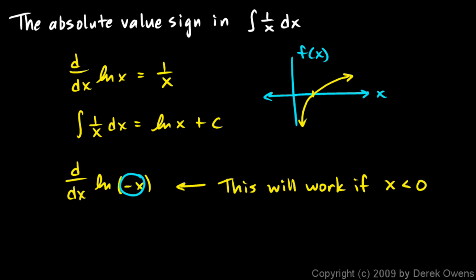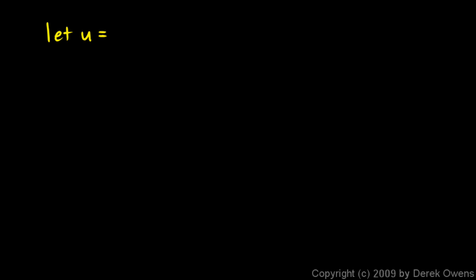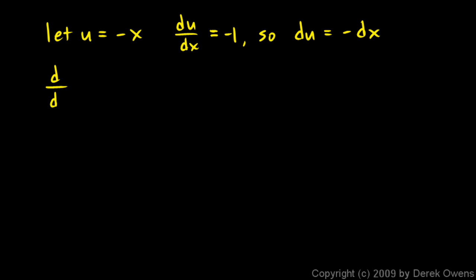Because if x is negative, then negative x will be positive, and we can have a positive value as the argument for our natural log function. So the question becomes: how do we differentiate the natural log of negative x? I'm going to let u equal negative x, and when I do that, then du/dx equals negative 1. So it follows from that that du is equal to negative dx. So the derivative with respect to u of the natural log of u is going to be 1 over u — that we've already established. The derivative of the natural log is 1 over our variable; in this case our variable is actually a function, but the same concept still applies.